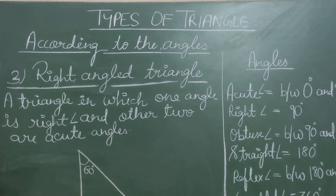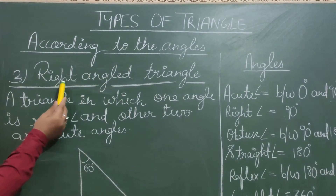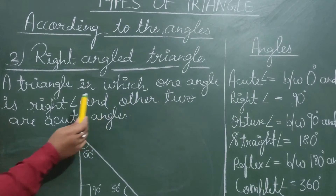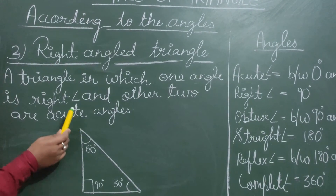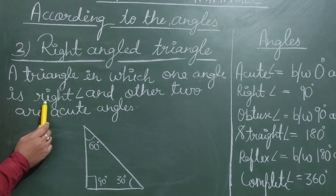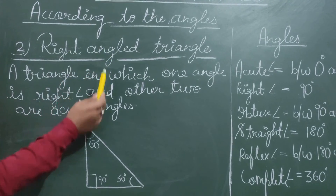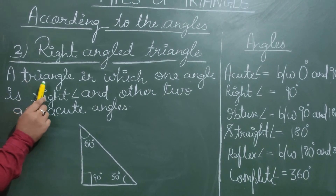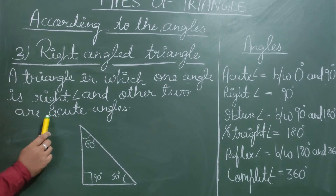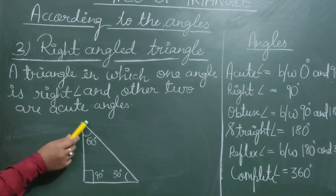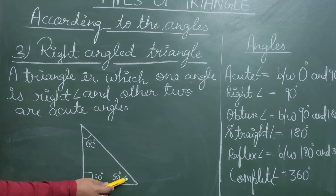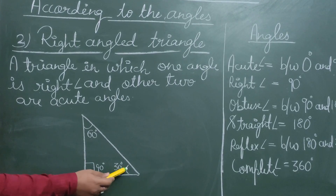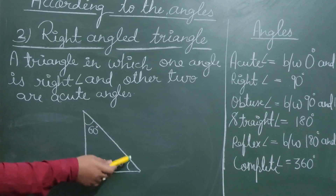The third type of triangle according to angles is the right angle triangle. A triangle in which one angle is a right angle and the other two angles are acute is called a right angle triangle — also known simply as a right triangle. When one angle is exactly 90 degrees and the remaining two angles are acute, that is why the full figure is a right angled triangle.